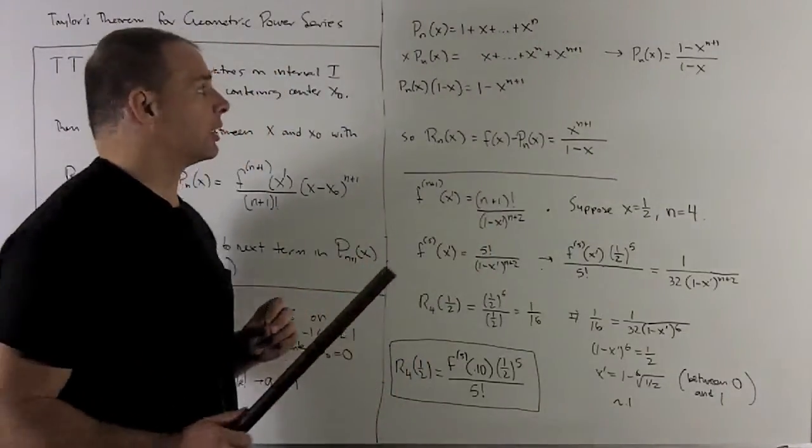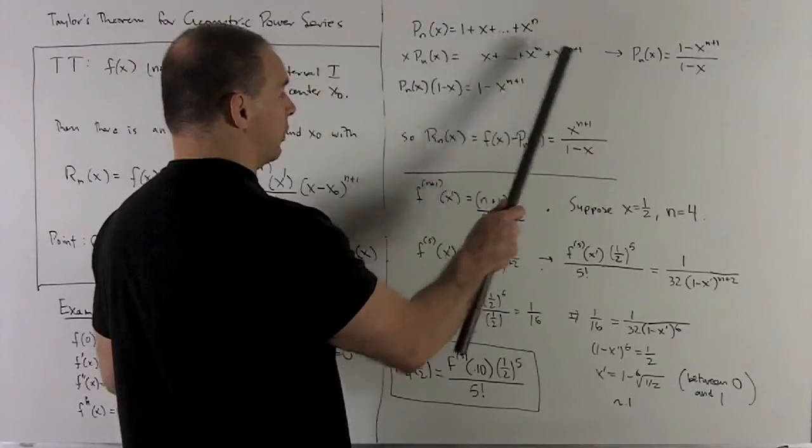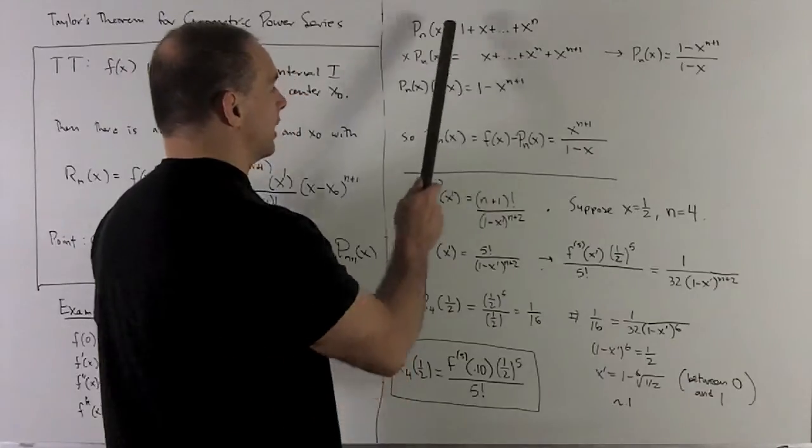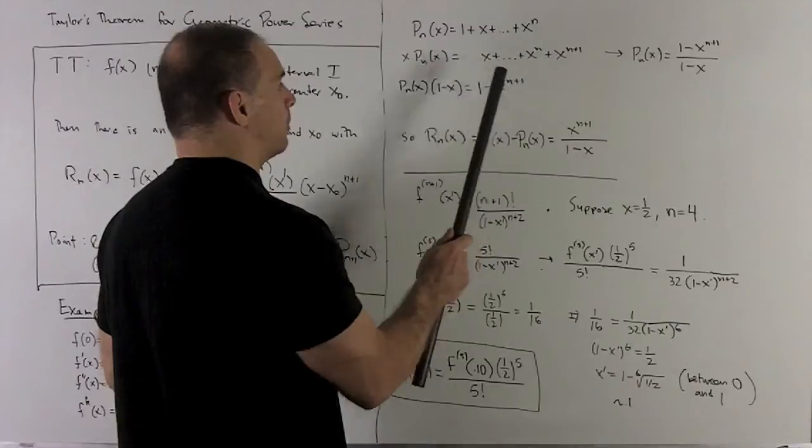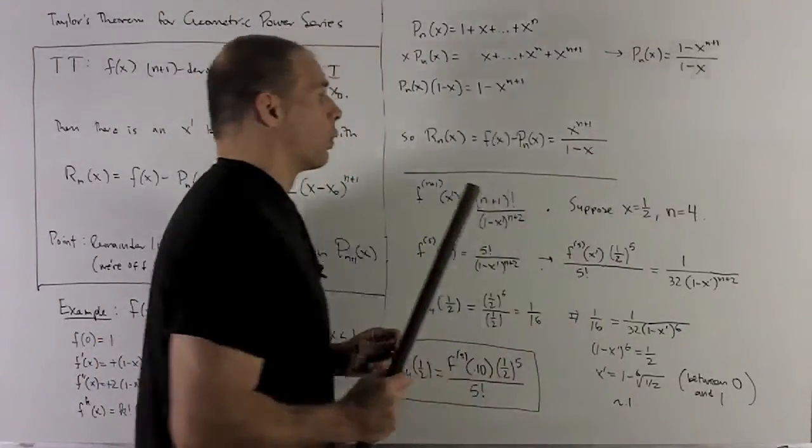Remember we can clean this up a little bit. If I multiply by x, that's going to shift everything over to the right by 1, and then I pick up an x to the n plus 1. Take the difference, that's going to give me 1 minus x to the n plus 1, and then we divide by 1 minus x to get this in this nice closed form.